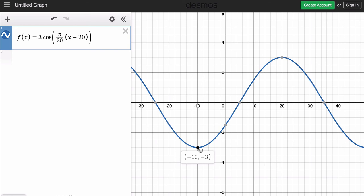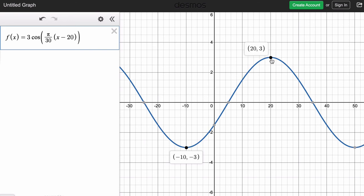And I think this will do it. Let's test it. Here we have negative 10, negative 3, and positive 20, 3. That works. That fits our function right there. Then at 50, it's back at a minimum again.